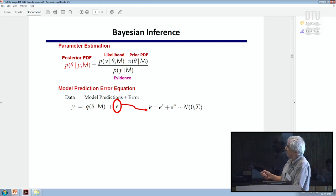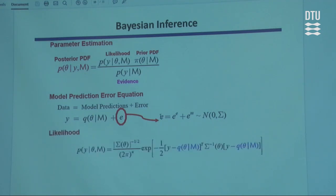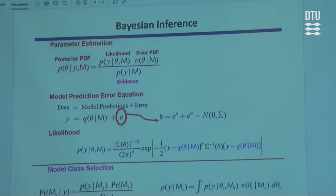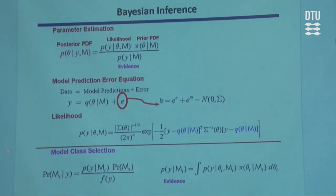The error could be due to measurement or model error — the fact that whatever model you assume is not an exact representation of reality. Usually you assume an error which has zero mean and a covariance structure. Once you've done that, you can build up the posterior. You can also perform model selection: if you have several model classes M_i, you can select the best one or rank them, but to do this you need to compute the evidence, which is a multi-dimensional integral.